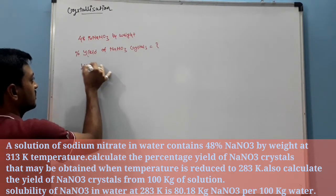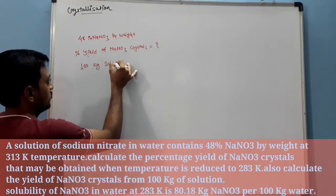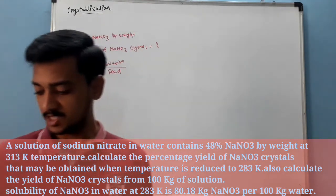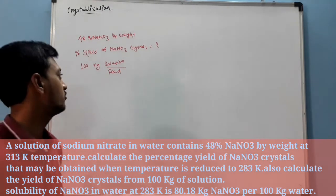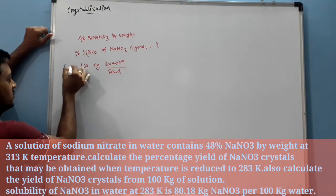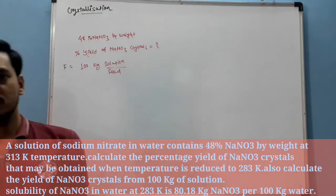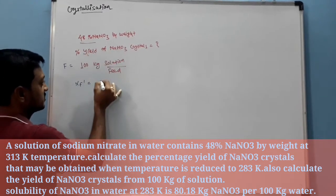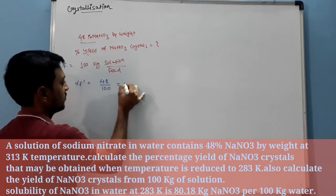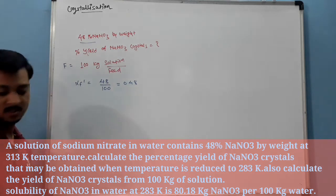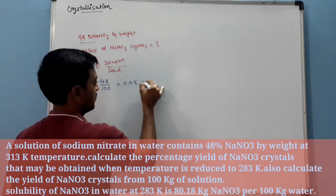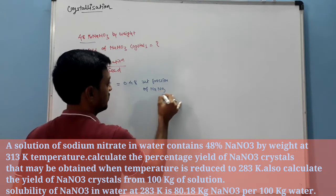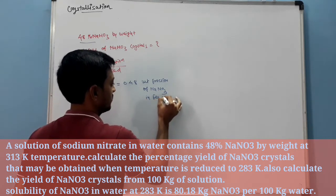So the basic data is given: 100 kg solution, that means our feed F is equal to 100 kg solution. Now what is XF dash? XF dash is 48%, so 48 by 100 is equal to 0.48 because we want fraction. This is the weight fraction of NaNO3 in feed.